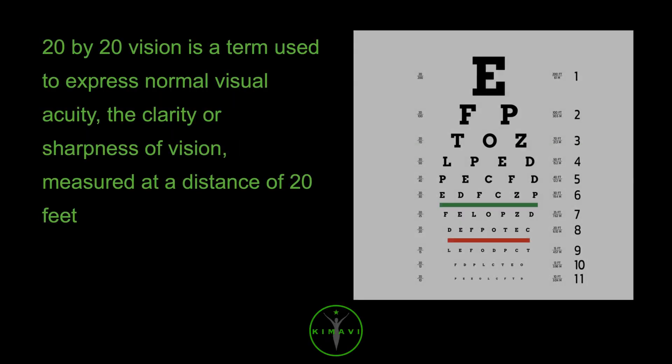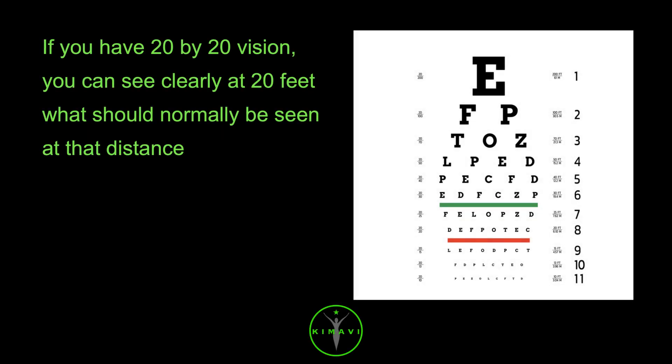20 by 20 vision is a term used to express normal visual acuity, the clarity or sharpness of vision, measured at a distance of 20 feet. If you have 20 by 20 vision, you can see clearly at 20 feet what should normally be seen at that distance.